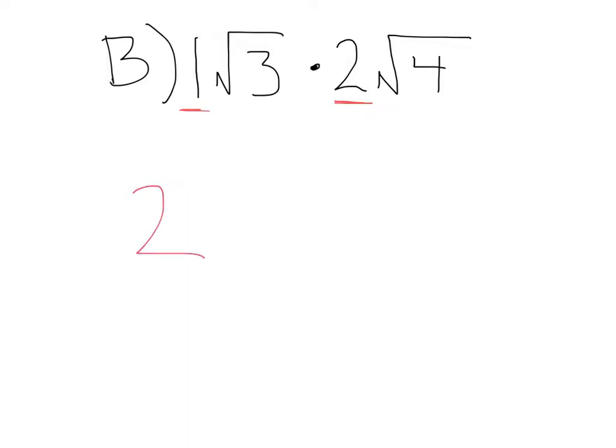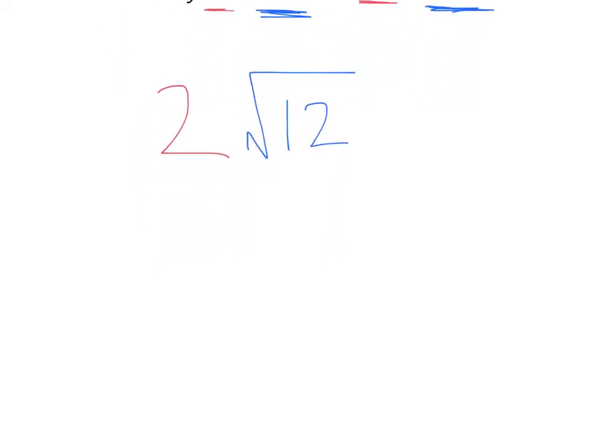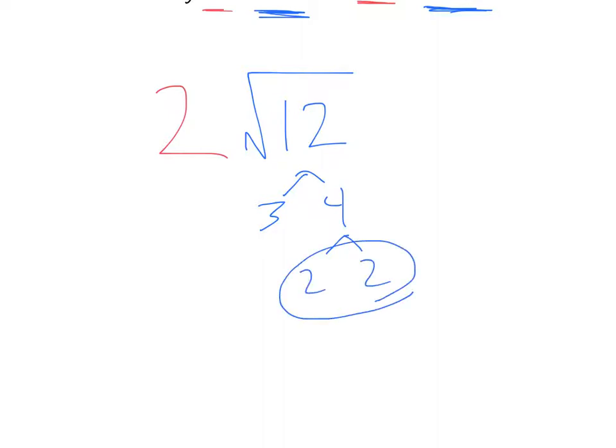Now moving to inside the square root, we have 3 times 4. That will give us the square root of 12. Now this just looks like some of the problems we did before where we could simplify from here. Let's take this 12 here. We could break that down into 3 times 4. The 4 could be broken down into 2 times 2. We've got a pair of 2's, so we can pull that out.